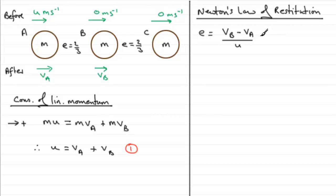We know that e is two-thirds, so that equals vb minus va all over u. If we now multiply both sides by u, we end up with two-thirds u equals vb minus va, and that would be our second equation.